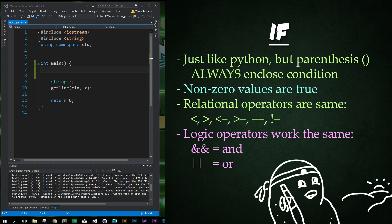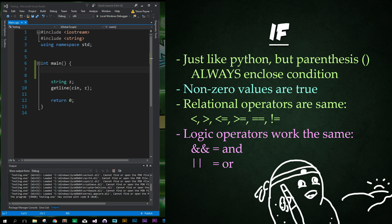If statements work just like they did in Python, but parentheses must enclose the condition that you're checking for. Condition values that are non-zero are true, even if they are negative. We can use relational operators to compare different values just like we did with Python and as we went through earlier in our logic operators discussion. You can also use logic operators of and and or.